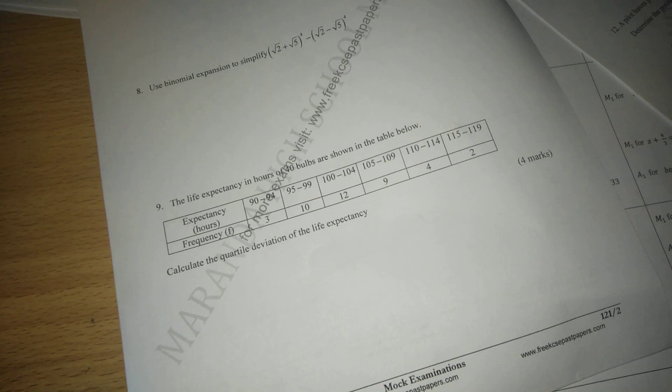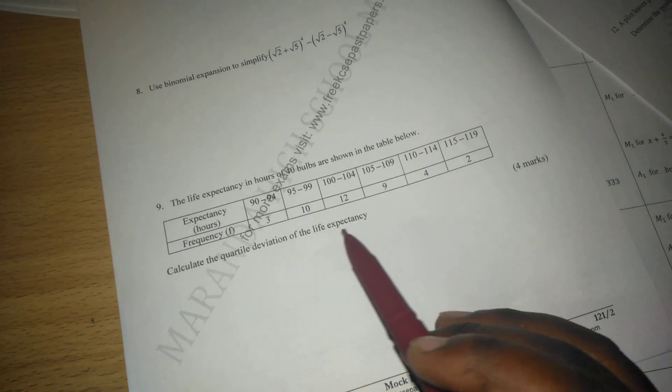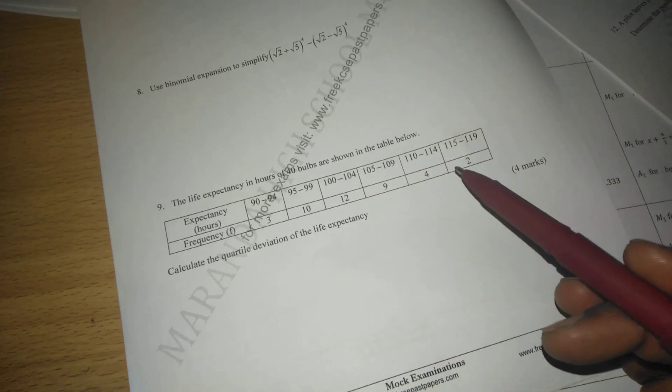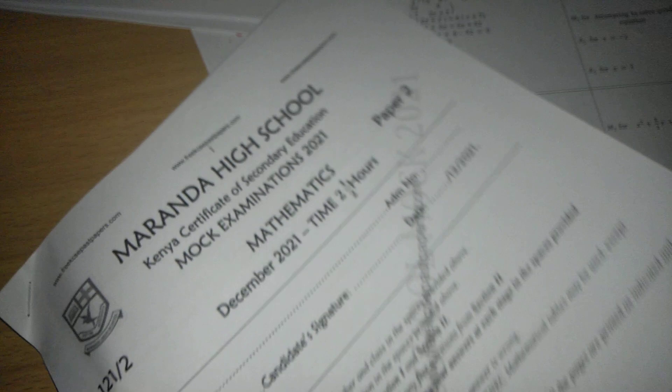Thank you for joining this lesson. We are going to calculate the quartile deviation of the life expectancy of 40 bulls provided the data is given in the table below. We are still considering the Maranda High School mock and we're going to study that question on statistics.